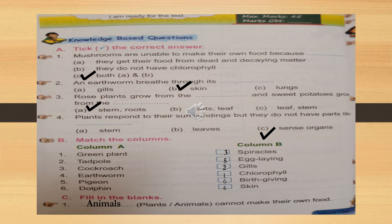Third one: rose plant grows from dash and sweet potatoes grow from dash. The answer is A — stem and root. Rose plants grow from stem and sweet potato grows from roots. Very good children. The answer A is correct. Those who got it wrong, you need to rub and tick.